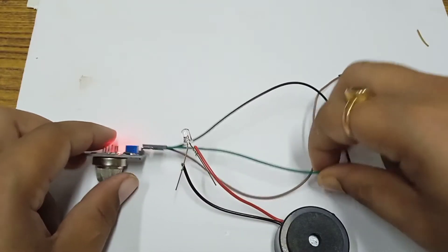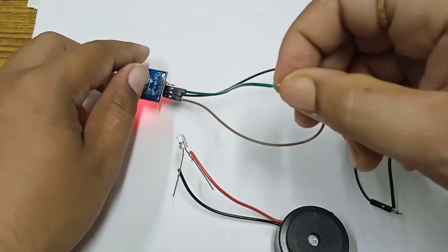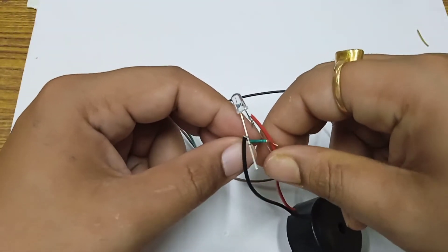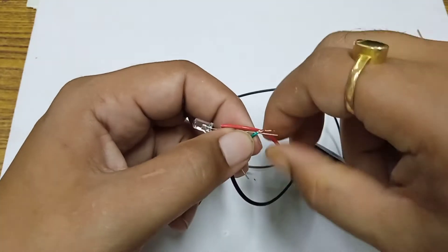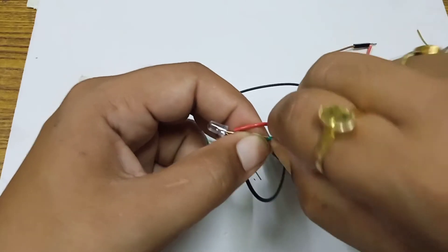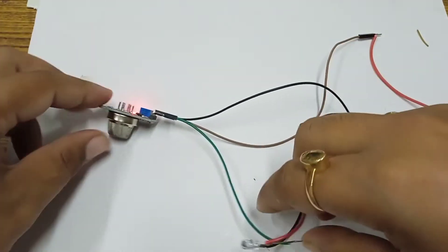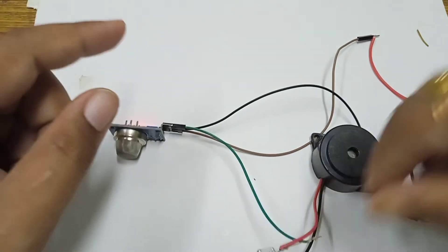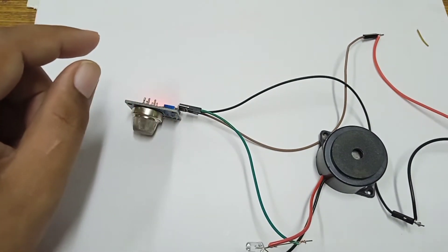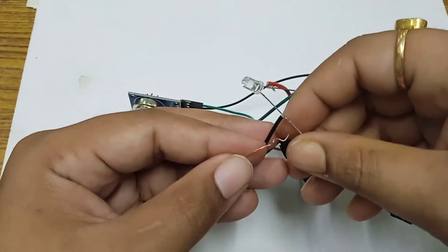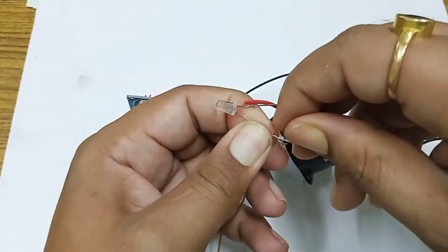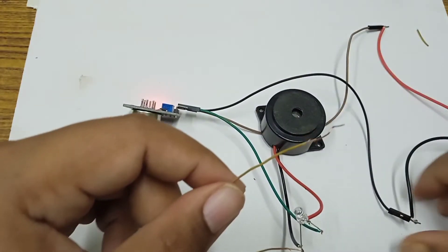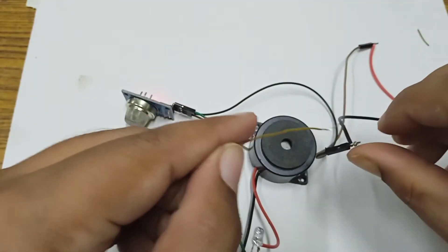So here we have the output point. For the output point, we need to connect this to the positive terminal of the LED or the buzzer, and we have to connect the negative terminal of this buzzer to the ground. So we need another wire and connect to the negative terminal of the buzzer or the LED, and this will connect to the negative supply terminal.